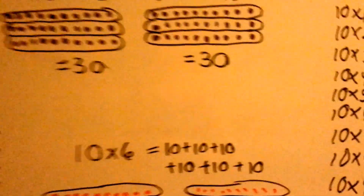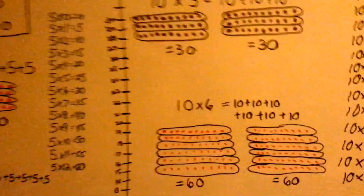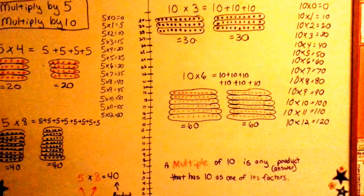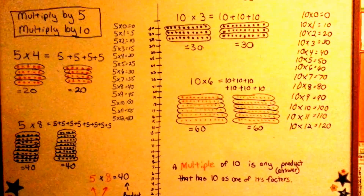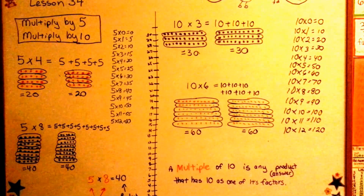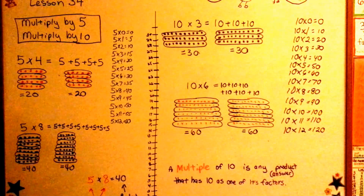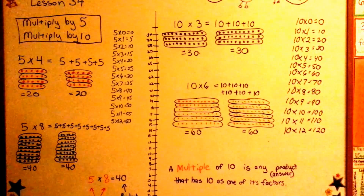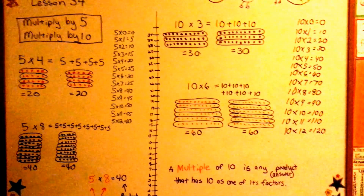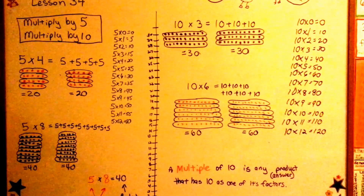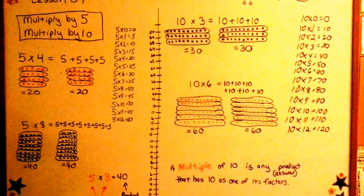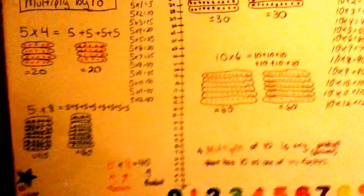So that's multiplying by 5 and multiplying by 10. You should try to practice these as much as possible so that you can become very quick with them. When you're doing harder math, like division and eventually getting into algebra, if you've got your times table memorized, you'll go very quick.